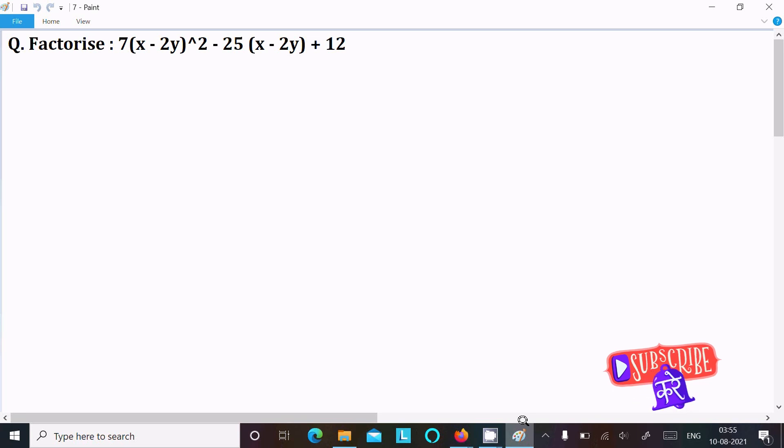In this lecture I am going to factor 7(x-2y)² - 25(x-2y) + 12. So let's see the answer. First, you are writing the given expression 7(x-2y)² - 25(x-2y) + 12. We can easily achieve the output if I assume k equal to x-2y.